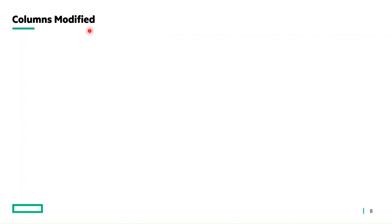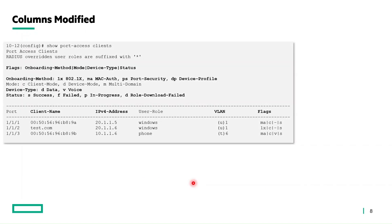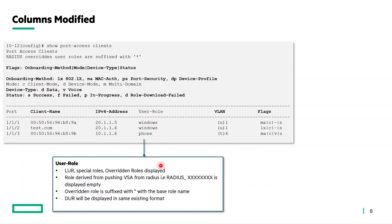The first column modified is the user role column, which will display the local user role, special roles, and overridden roles. For roles derived from pushing VSAs from RADIUS, they were previously displayed as 'radius_' followed by a random number. Such roles will now be displayed as empty because they do not carry any role name. For overridden roles, previously displayed as 'radius_overridden' plus a random number, they will now display the base role name suffixed with an asterisk. For the default user role, there is no change — it will continue displaying the DUR name.